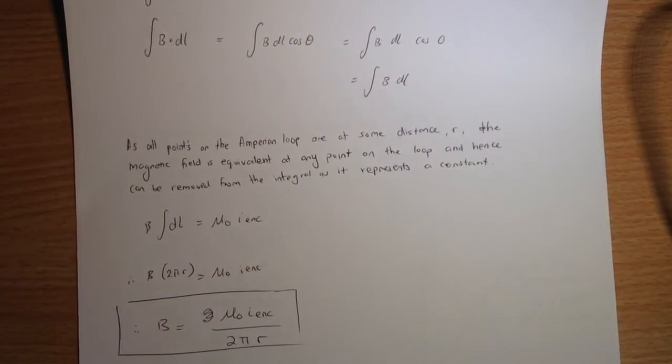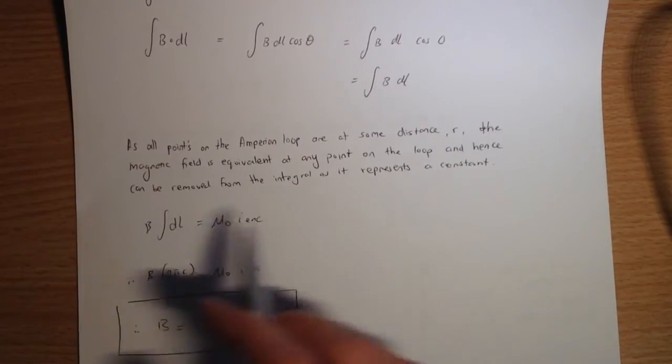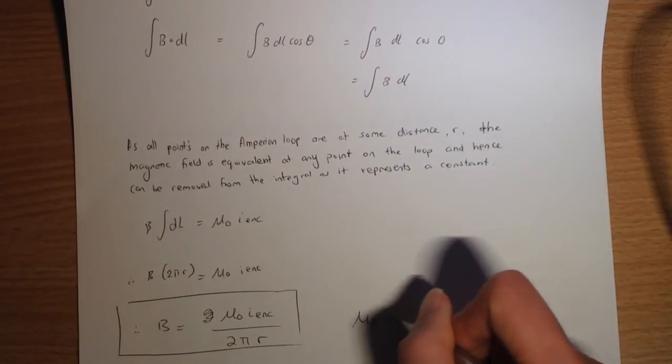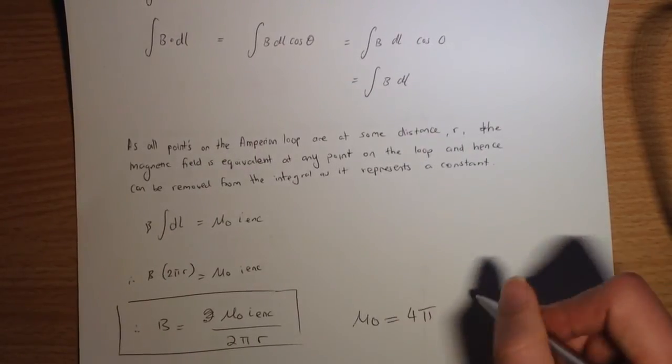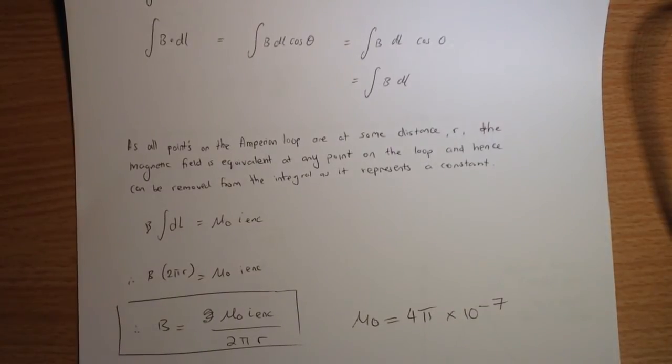Then we integrate over dl, in this case we have a circle, so when we're integrating dl, we're obviously going to end up with 2 pi r, and from there we just rearrange by bringing 2 pi r into the denominator on the right-hand side, and we've got an expression for b at some distance r with a current-carrying wire, when we're outside of that current-carrying wire. And of course, just to remind you, the constant mu naught is 4 pi times 10 to negative 7, in terms of its magnitude.